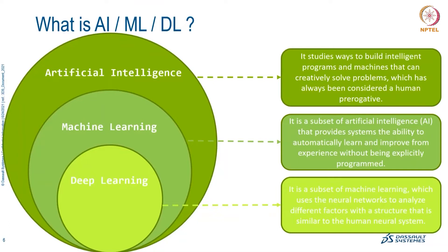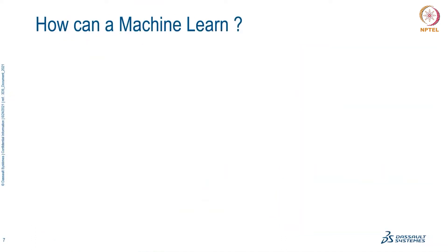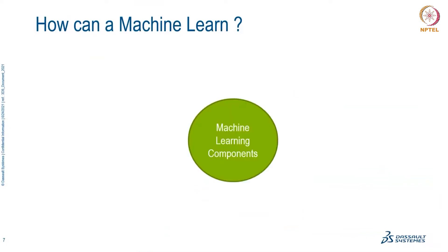So AI, ML, and DL — these are the differences between the three terms that are regularly used interchangeably. Now, how does a machine learn? What are the things required to make the machine learn from data?